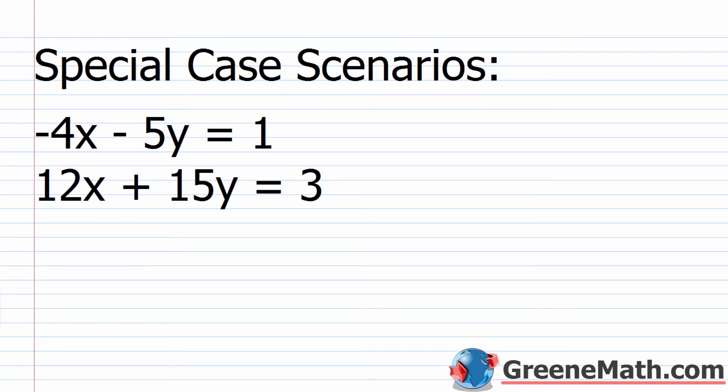Not a very difficult procedure — you just have to remember the order of steps. You're basically solving a linear equation in one variable each time. Now let's talk about special case scenarios. Recall from graphing: parallel lines give no solution since the lines never cross, and identical lines give an infinite number of solutions. When you have a no-solution case, you'll end up with a nonsensical statement like 4 equals 12 or 0 equals negative 36.